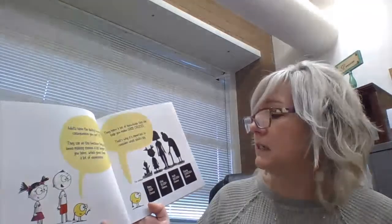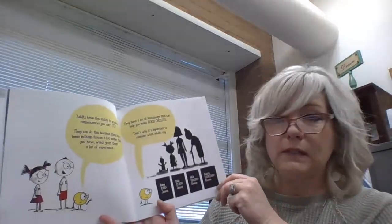Adults have the ability to predict consequences that you can't yet. They can do this because they've been making choices a lot longer than you have, which gives them a lot of experience. They have a lot of knowledge that can help you make choices. That's why it's important to consider what adults say.